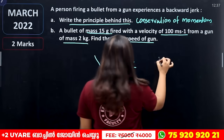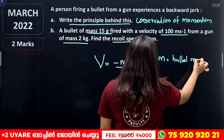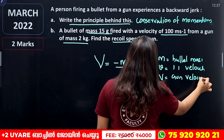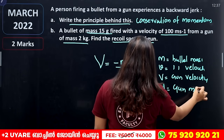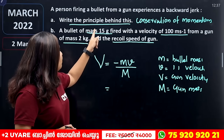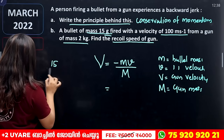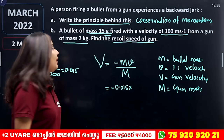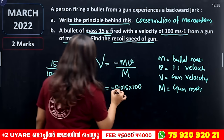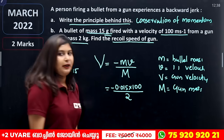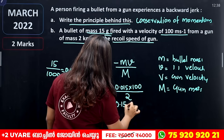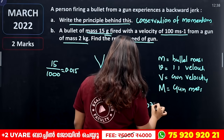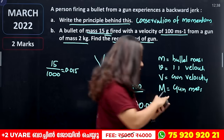Small m is the mass of the bullet, small v is the velocity of the bullet, and capital V is the recoil velocity of the gun. The bullet mass is 15 grams, which is 0.015 kg. The velocity of the bullet is 100 m/s. The mass of the gun is 2 kg. So V equals minus 0.015 into 100 divided by 2, which gives 0.075. Wait — that is 1.5 divided by 2, which equals 0.75 meter per second.